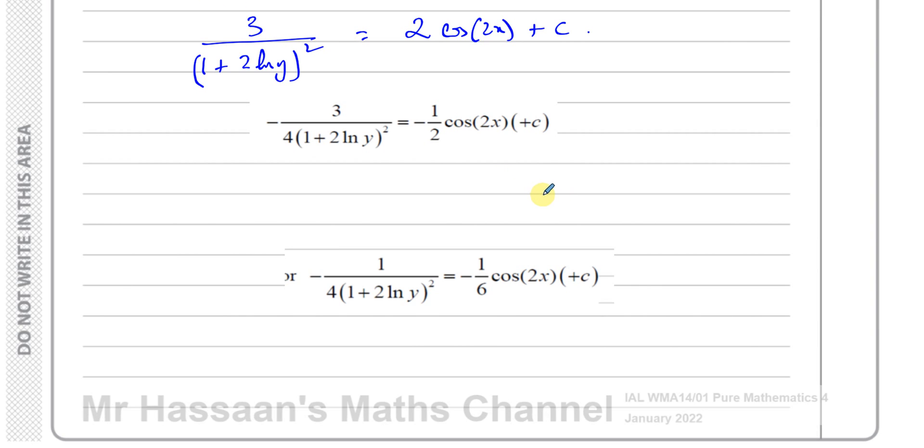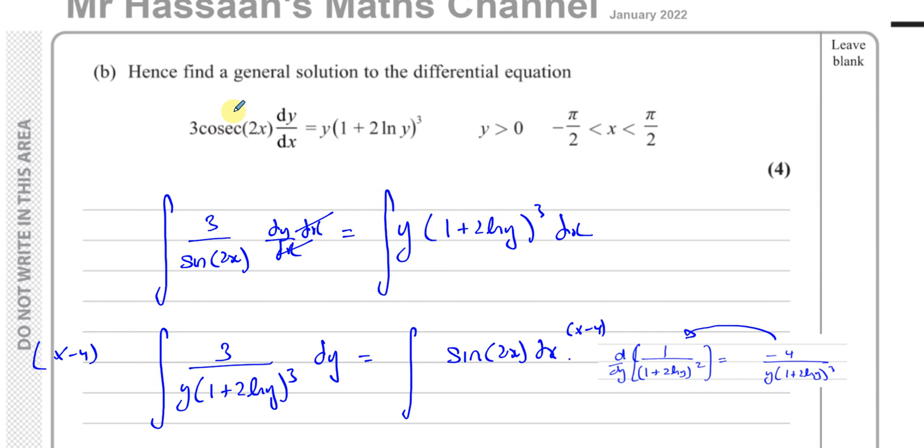I want to explain why it's not a mistake. The question says find a general solution to the differential equation. It doesn't say find the general solution in a particular form. When you solve a differential equation you have to get rid of the dy/dx by integrating both sides with respect to x.